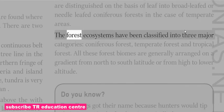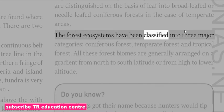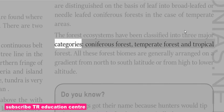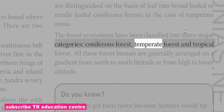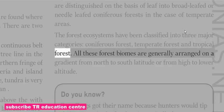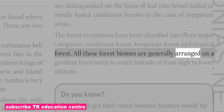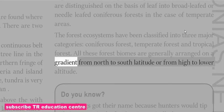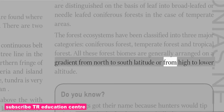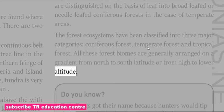The forest ecosystems have been classified into three major categories: coniferous forest, temperate forest and tropical forest. All these forest biomes are generally arranged on a gradient from north to south latitude or from high to lower altitude.